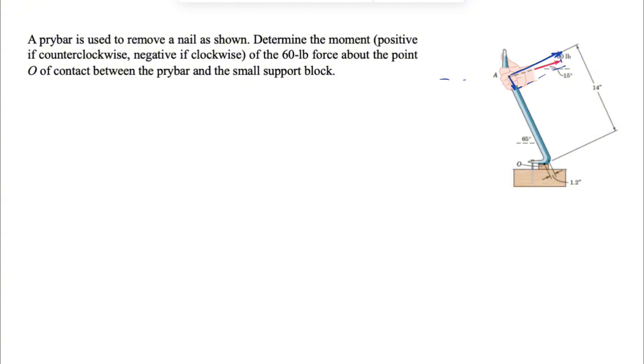So if we draw one line parallel to our horizontal, this angle here is 15 degrees. And since we have this one 65 degrees, this one in here would be 65.